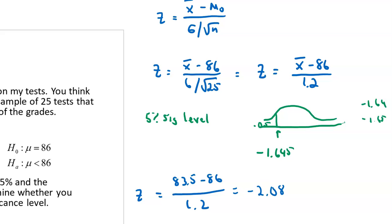Where is negative 2.08? It falls to the left of my critical value of negative 1.645. My test statistic of negative 2.08 is to the left of negative 1.645, so I should reject the null hypothesis. The reason I reject is because it falls outside that critical value. If the test statistic were somewhere in the middle, I would not reject — but because it's so far out, I reject the null hypothesis.